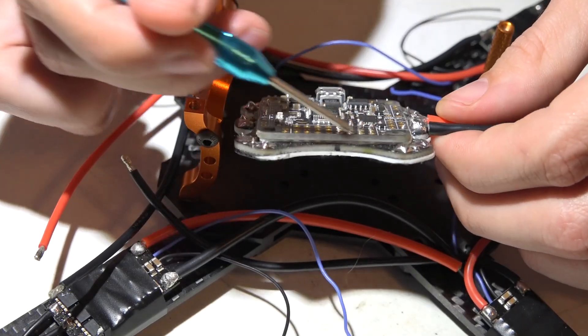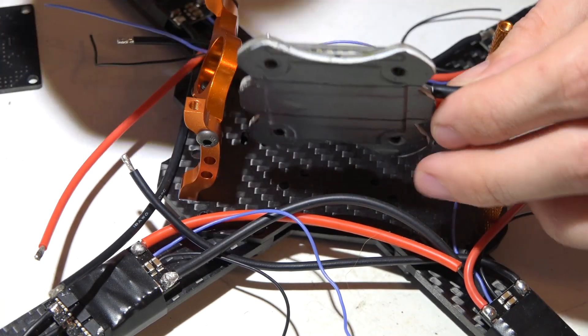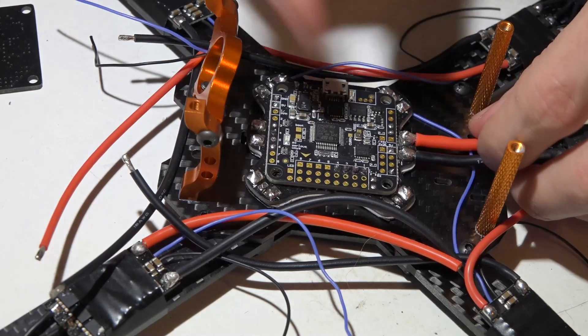The PDB has foam on top so the flight controller is not actually contacting the PDB, and then there's more foam on the bottom side, so this is basically soft mounted.